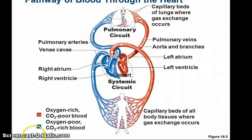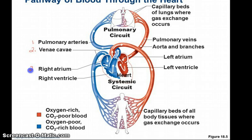You can think of the heart as having two pathways or circuits. One is called the pulmonary circuit and the other is the systemic circuit. The pulmonary circuit is considered the right side of the heart, and in the diagram everything in blue makes up the pulmonary circuit. It includes the pulmonary arteries, the inferior and superior vena cava, the right atrium, and the right ventricle.